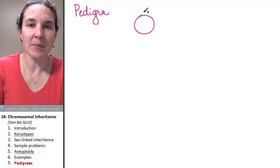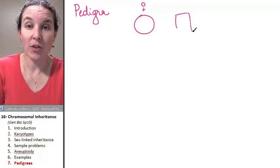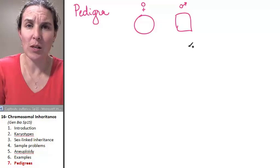Circles are females, and of course, squares are male, of course.